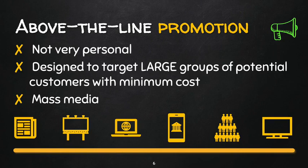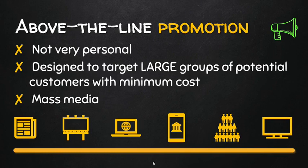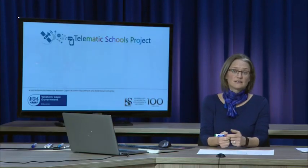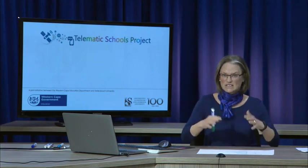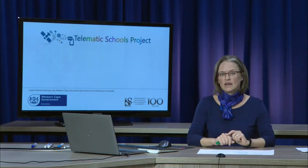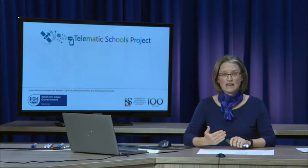Above the line promotion makes use of mass media. At the bottom of the screen you can see icons of the different types of media that can be used: newspapers, billboards, the internet. Smartphones are included because so much promotion now comes through SMS, WhatsApp, Telegram, Instagram, and other apps — all delivering that buy-buy-buy message. And of course, TV as well.